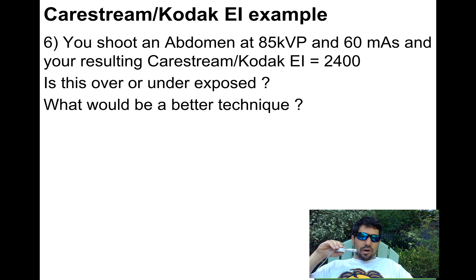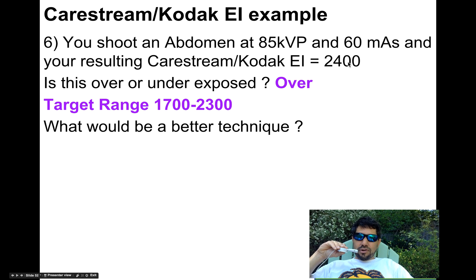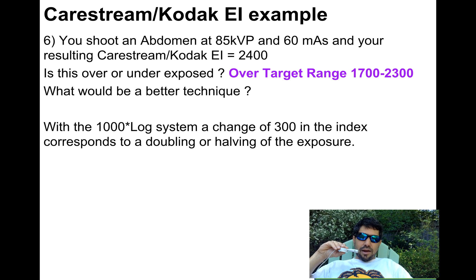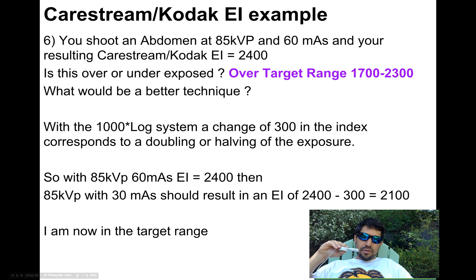Last example: you shoot an abdomen at 85 kVp and 60 mAs, resulting in an EI of 2,400. Is it over or under? The range is 1,700 to 2,300. At 2,400 it's over — not by much, but it's over. So the mAs is coming down. With the thousand-times-log system, a change of 300 in the indicator corresponds to doubling or halving. I'll cut my mAs in half from 60 to 30 mAs, and I'd expect to drop that EI by 300 — now I'm at 2,100. Now I'm in range.